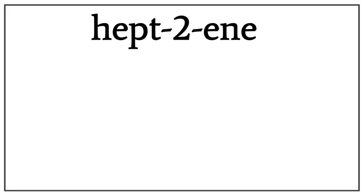Let's draw the structure for hept-2-ene. Hept here tells us that there are seven carbons present in the longest carbon chain.